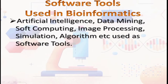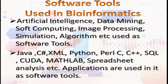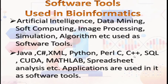What are the software tools used in Bioinformatics? Artificial intelligence, data mining, soft computing, image processing, simulation, and algorithms are used as software tools. Other tools include Java, C-Sharp, XML, Python, Perl, C, C++, SQL, MATLAB, spreadsheet analysis, and more. Nowadays, popular programming languages like Java, C-Sharp, Python, Perl, and C++ are all used in Bioinformatics as tools.